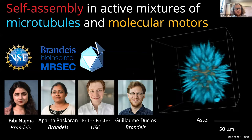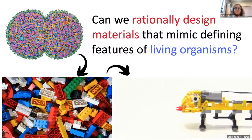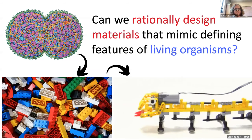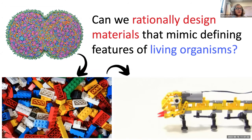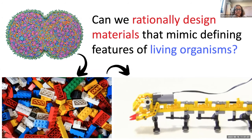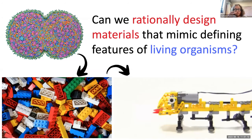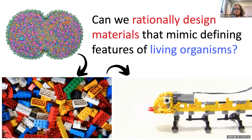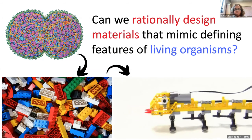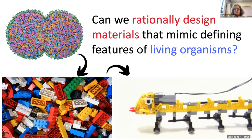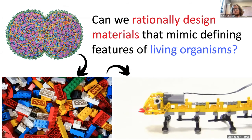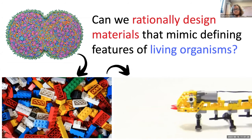The question I want you to keep in mind during this talk is: is it possible to rationally design materials that will mimic some different features of a living organism? If I look at a cell, it's very complex — you have a lot of different moving parts that consume energy — but is it possible to isolate the building blocks responsible for features like cell division, metabolism, or cell motility, and then reconstruct simple materials that mimic those defining features?